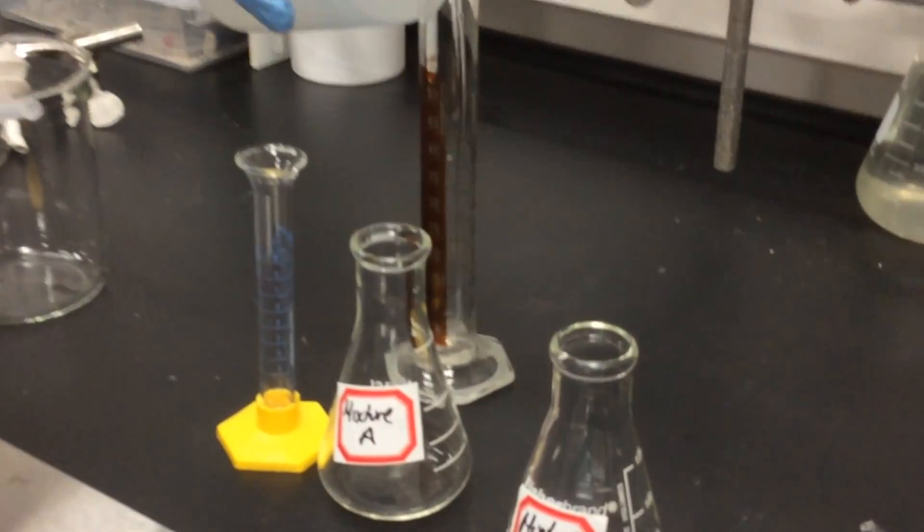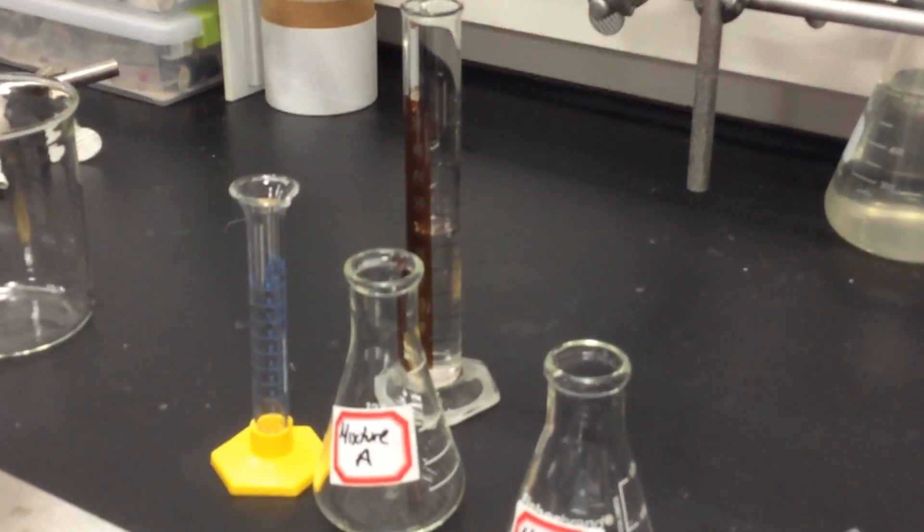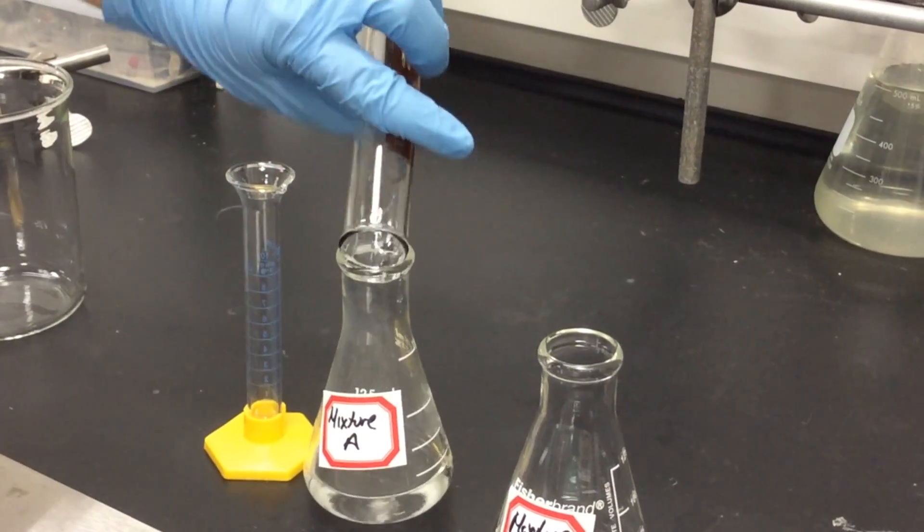Next, you're going to add 30 milliliters of water into your graduated cylinder, and then take that 30 milliliters of water and pour it into mixture A.